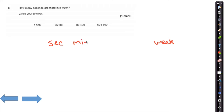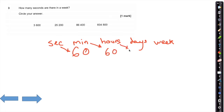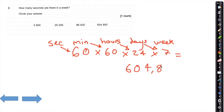Going seconds, then minutes, hours, days, and then weeks: there are 60 seconds in a minute, 60 minutes in an hour, 24 hours in a day, and 7 days in a week. If we multiply all these numbers together and press equals, you're going to get your answer: 604,800.